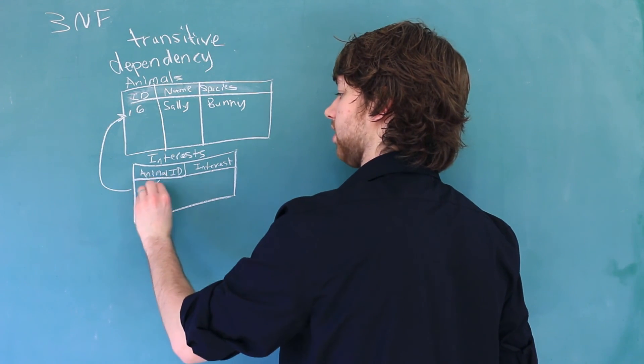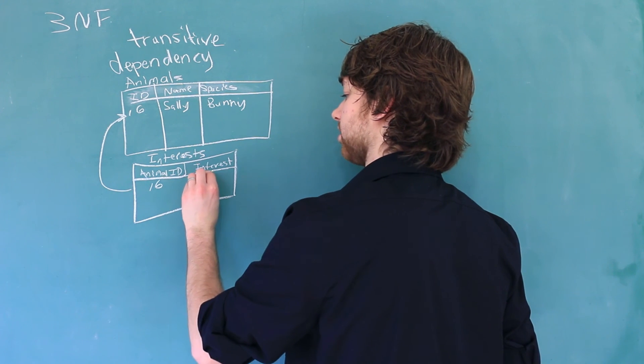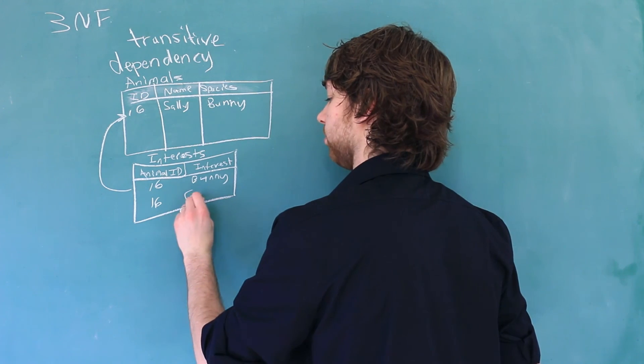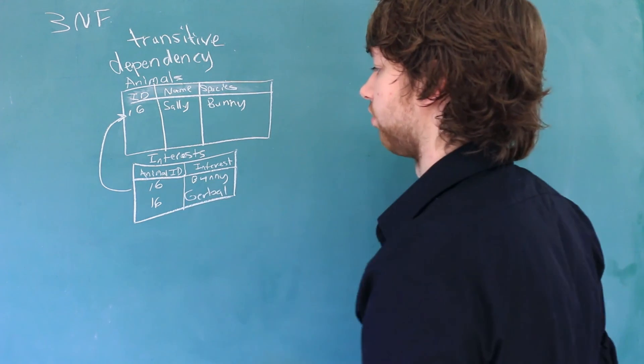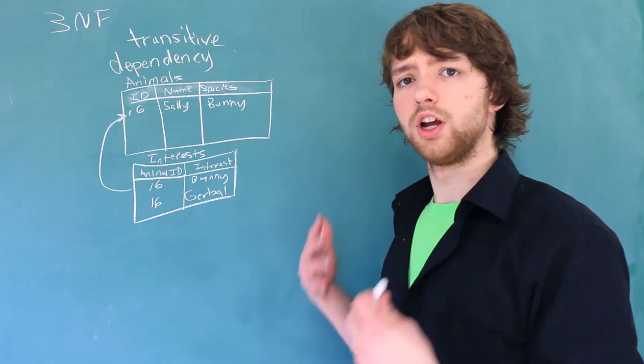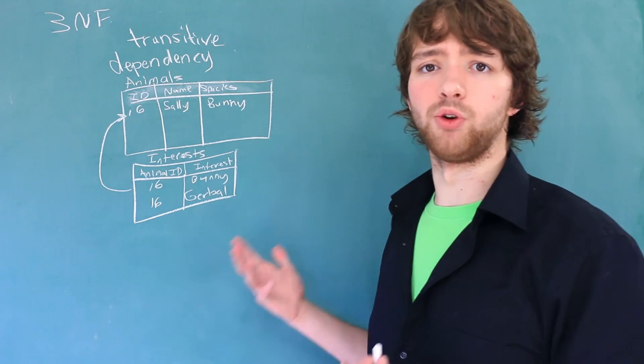And this bunny has interest in other animals. So we add a row to this interest table referencing that ID. So it would say 16 and this thing is interested in bunnies. And then also 16 and gerbil. So this is our table structure so far. And there's really not anything wrong with this table structure.